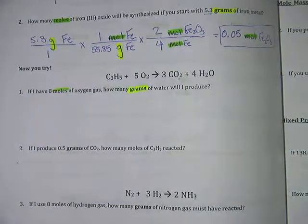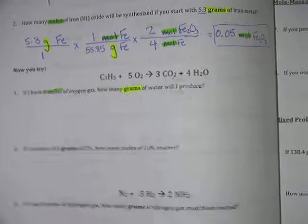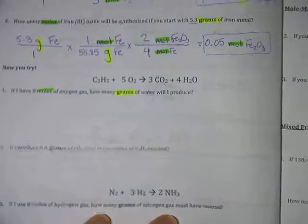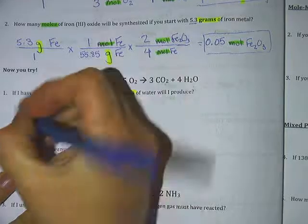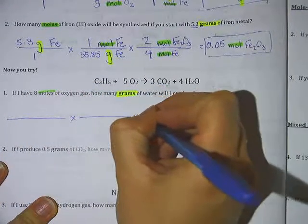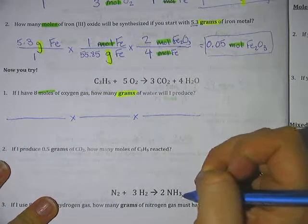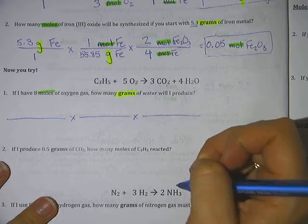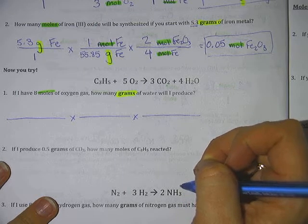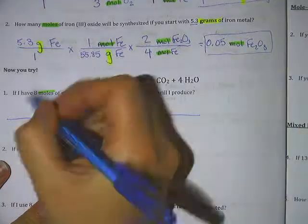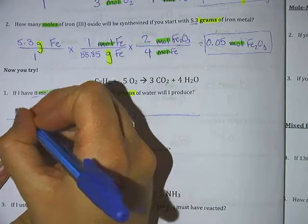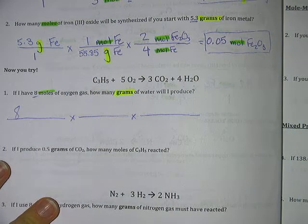So the first thing you do once you decide, okay, there's three fractions, draw your three fractions. Go ahead, draw your three fractions. And on top of the first fraction, what do you always put? The number. The number they gave us. Now, remember, we are no longer allowed to write just a number. We also need to write what next to it?